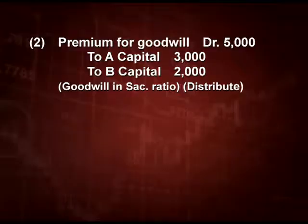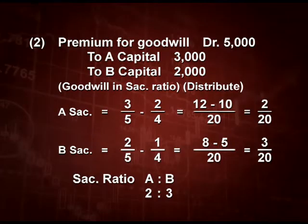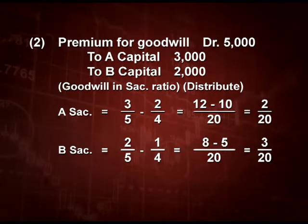Next entry: goodwill is distributed between the old partners in sacrificing ratio. Premium for Goodwill debit 5,000 to A and B in sacrificing ratio. Sacrificing ratio is old ratio minus new ratio. Old ratio: A = 3/5, B = 2/5. New ratio: A = 2/4, B = 1/4. Taking LCM of 20: A sacrifices 2/20, B sacrifices 3/20. So the sacrificing ratio is 2:3. We distribute 5,000 in ratio 2:3.